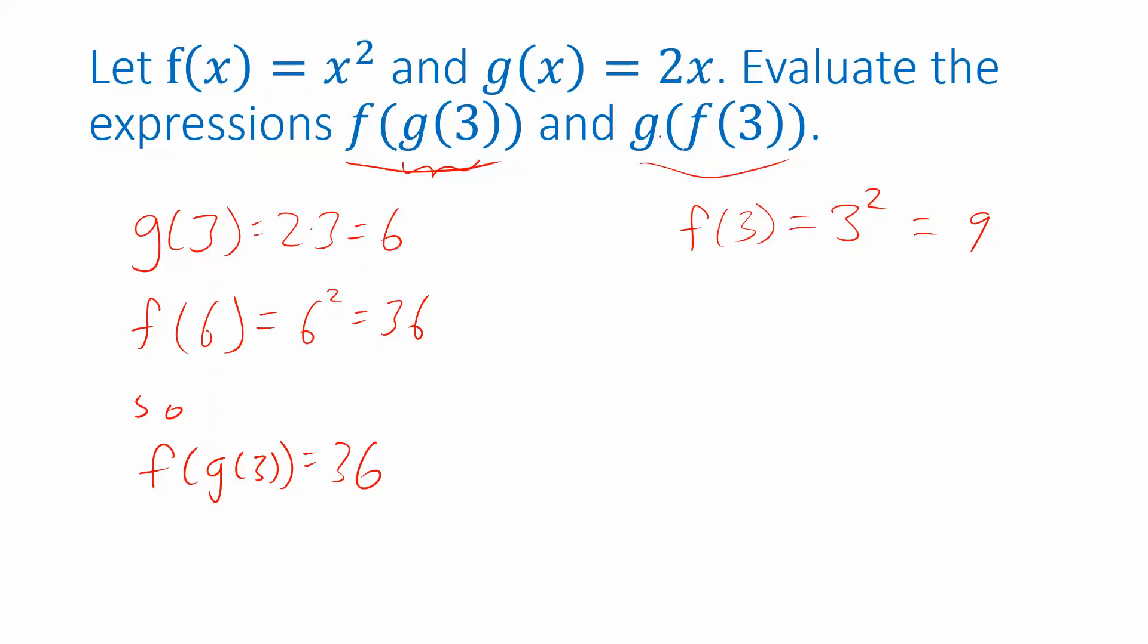And now I want to plug that into g. g of 9. Well, g of x is 2 times x, so g of 9 is 2 times 9. That's 18. And so I'm taking f of 3, figuring out what that is, and plugging it into g, and calculating that g of f of 3 is 18.